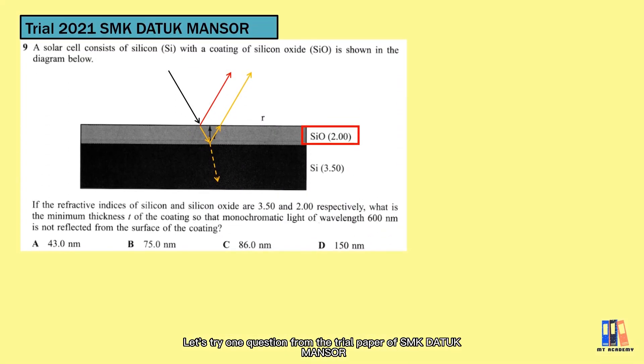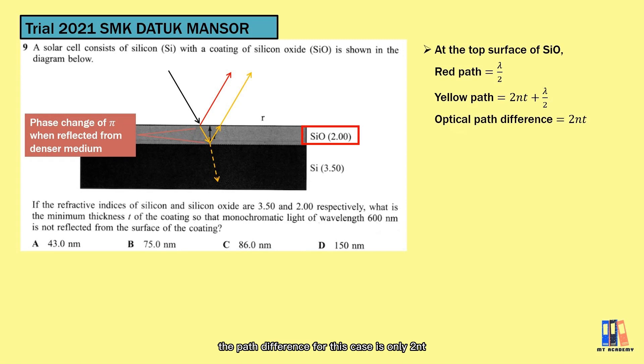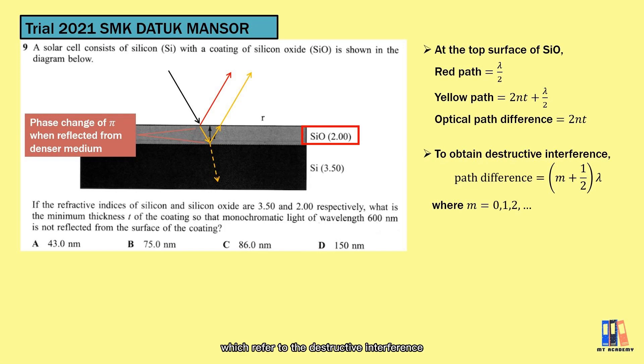Let's try one question from the trial paper of SMK Datuk Mansor. Here we have a similar case, except we have another denser medium below the coating of silicon oxide in this question. Let's go through all the points I mentioned. First, there is phase change if light is reflected from denser medium. In this case, both the reflected and refracted ray have the optical path of λ/2, since they are reflected from denser medium. For the yellow ray, since it travels to the bottom surface of silicon oxide and then reflects back to the top, it has an additional 2nt for its optical path. Therefore, the path difference for this case is only 2nt. The next step is about the application. The question requires non-reflection, which refers to destructive interference. What we do here is equate the optical path difference with the condition of destructive interference. For minimum thickness, m equals 0 if you follow my formula and sequence. So we have the equation 2nt = λ/2. In the end, t equals 75 nm. This is quite straightforward.